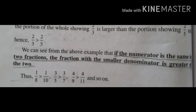For example, we will compare 1 by 8 and 1 by 10. The numerator is the same, so 1 by 8 is greater than 1 by 10. As the same way, 3 by 5 and 3 by 7 — the numerator is the same, so the fraction with the smaller denominator, which is 3 by 5, will be greater than 3 by 7.